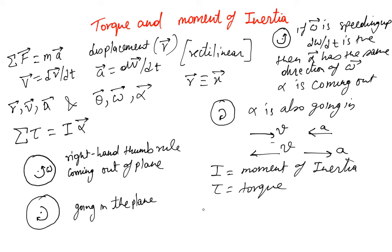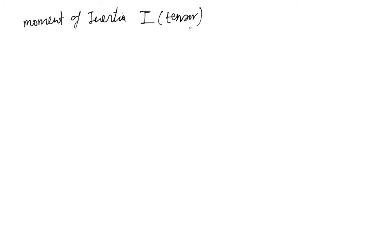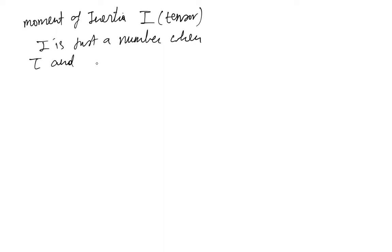We need to define torque T and moment of inertia I. Let's define moment of inertia first. I is actually something called a tensor — it's neither a vector nor a scalar. We do not need to fully discuss tensors, but I is just a number when torque and omega share the same axis.